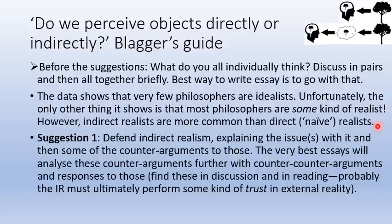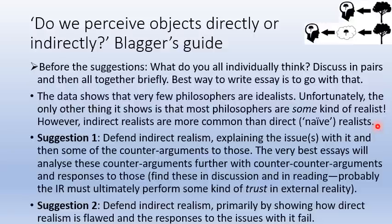The very best essays will analyse these counter-arguments further with counter-counter-arguments and responses. My guess is you're probably going to end up saying something like what Russell does in The Problems of Philosophy: yes, we can't prove 100% deductively that the external world is there, but it's our best hypothesis. The indirect realist must ultimately perform some kind of trust that external reality is actually there. My second suggestion is also to defend indirect realism, but primarily by talking about direct realism and showing how it is flawed — so walking through direct realism and showing how the responses to its issues fail, therefore indirect realism.